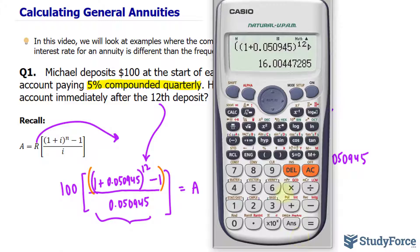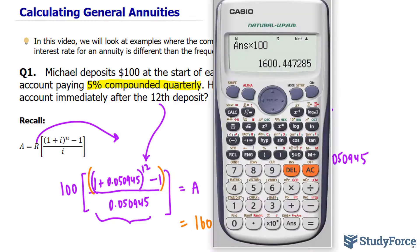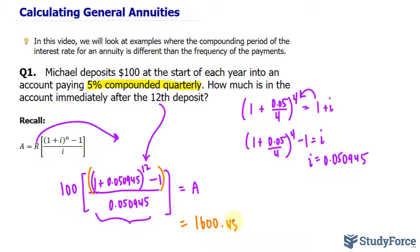We end up getting 16, we multiply that by 100, and that gives us an accumulated value including the interest of $1,600, and now we can round this to two decimal places because we're working with dollars: $1,600.45.